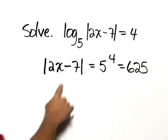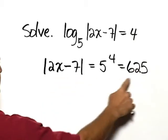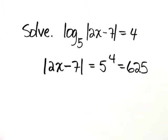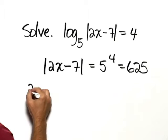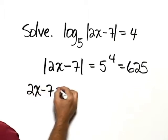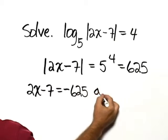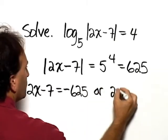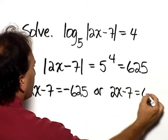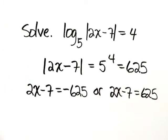So what we have is the absolute value of 2x minus 7 equals 625. Therefore we have two equations: 2x minus 7 equals negative 625, or 2x minus 7 equals positive 625.